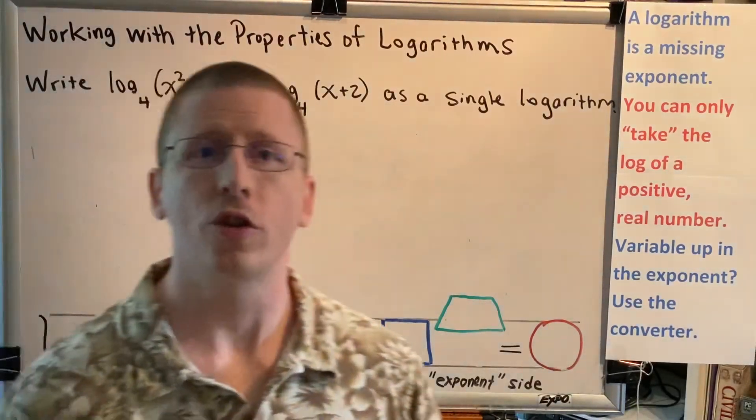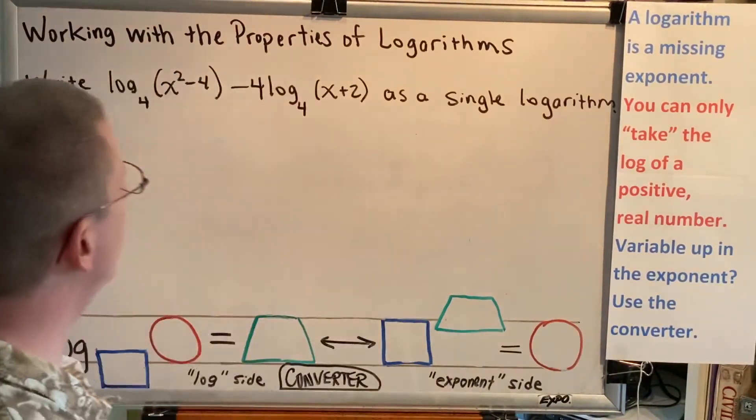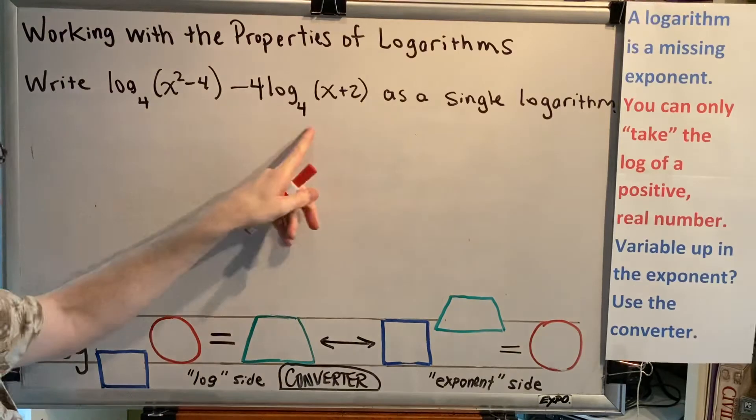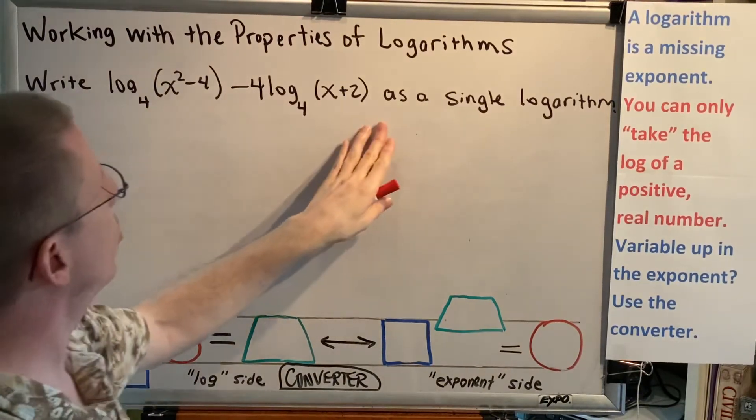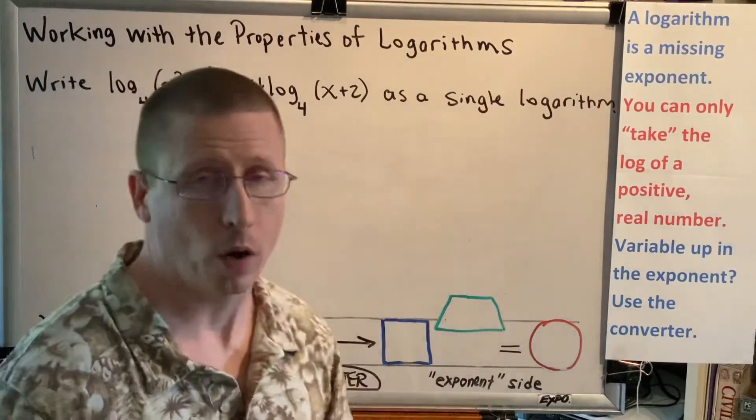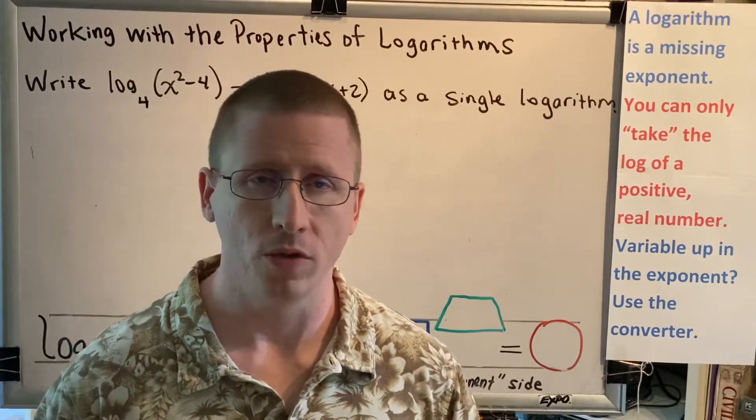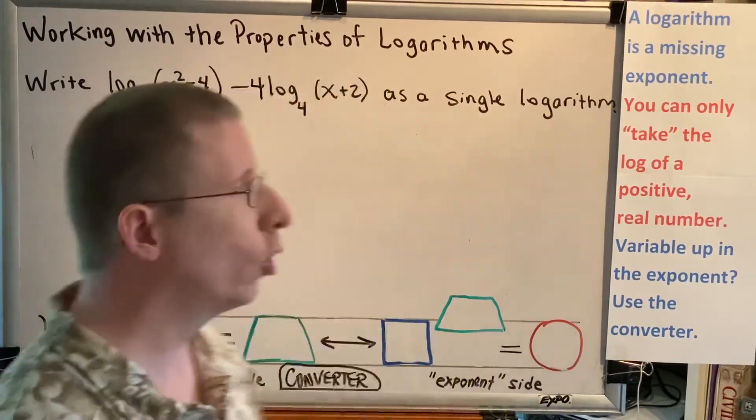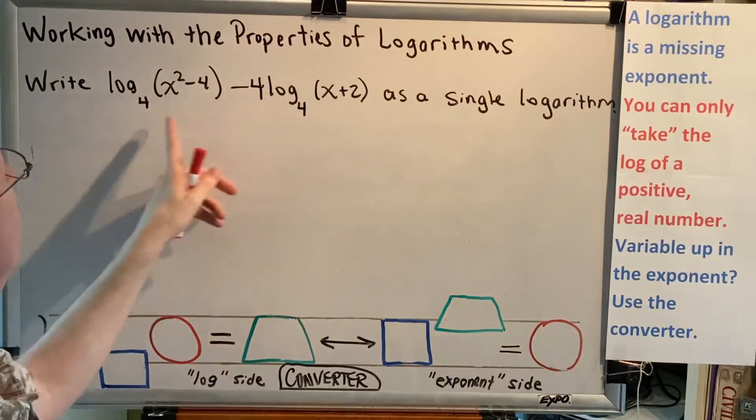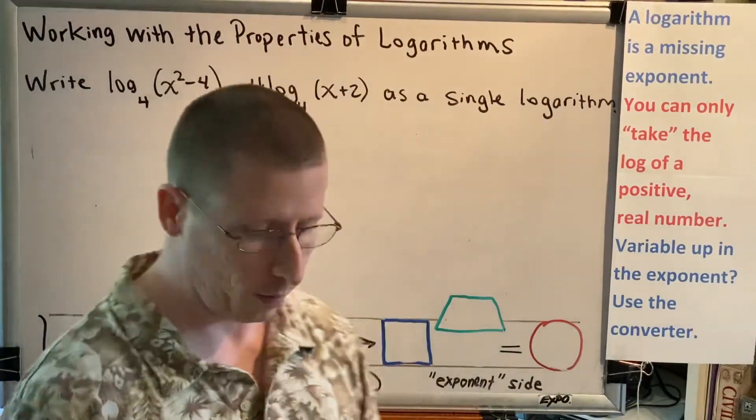Write log base 4 of x squared minus 4, minus 4 log base 4 of x plus 2, as a single logarithm. It's important to look at the directions. The directions give us two logs that are being subtracted, and they ask us to write it as a single logarithm, meaning we want only one. So we look at our log rules to see what rule will allow us to take two logs that are being subtracted and write it as a single logarithm.